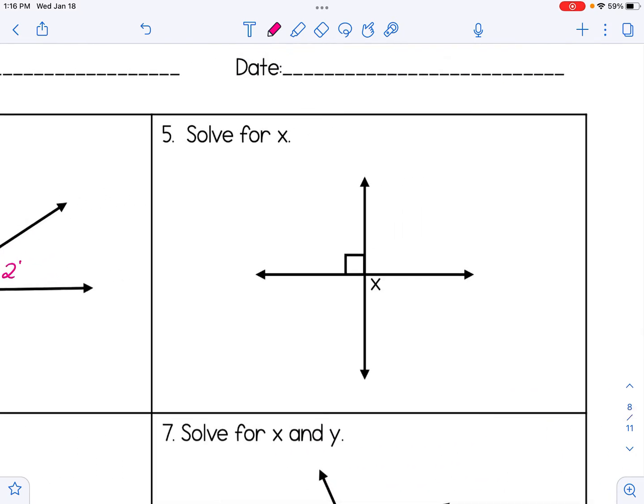In number five, it might look like at first glance that we're not given enough information, but we should recall that that little square indicates that that's a 90-degree angle. So I'm going to put that information in first, and then therefore X is 90 degrees.